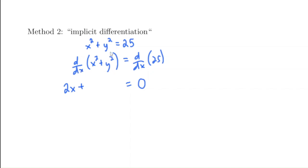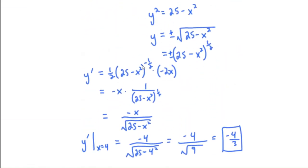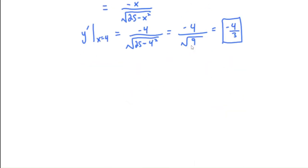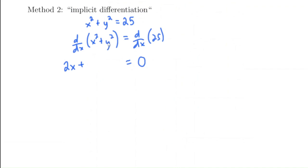We think of y as being a function of x. The derivative of y² is 2y · (dy/dx), using the chain rule. So we have 2x + 2y(dy/dx) = 0. Notice x and y are treated differently: the derivative of x² is 2x, while the derivative of y² is 2y · (dy/dx). Subtracting 2x from both sides gives 2y(dy/dx) = -2x, then dividing by 2y gives dy/dx = -x/y.